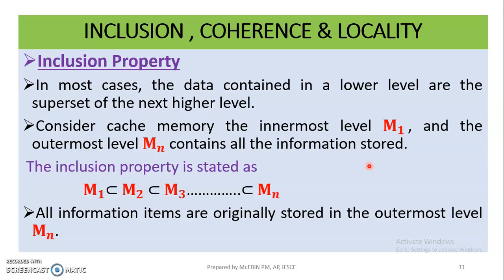The first property is the Inclusion property. In the memory hierarchy, the innermost level is M1, which is the cache memory, and the outermost level is Mn, which is the hard disk. The inclusion property states that M1 is a subset of M2, is a subset of M3, and so on, up to Mn.